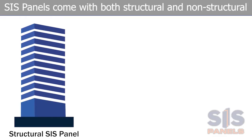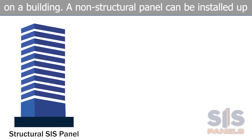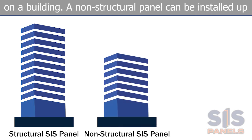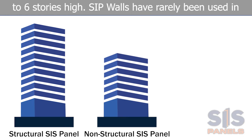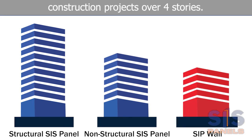SIS panels come with both structural and non-structural options. Structural panels can be installed at any height on a building, while a non-structural panel can be installed up to six stories high. SIP walls have rarely been used in construction projects over four stories.